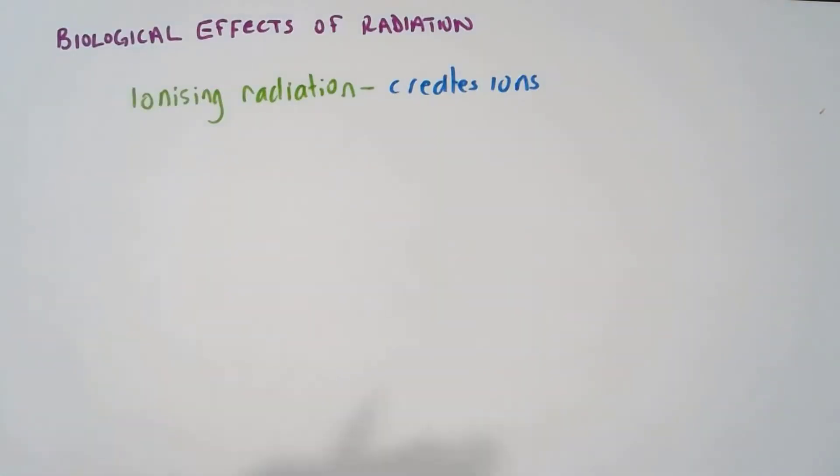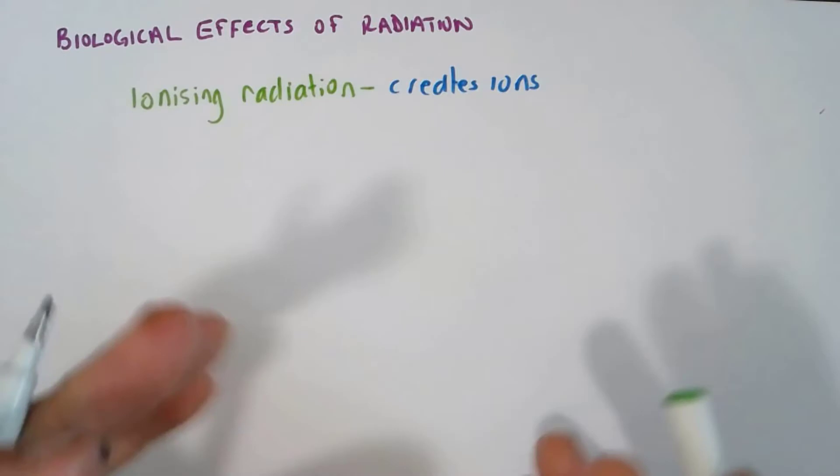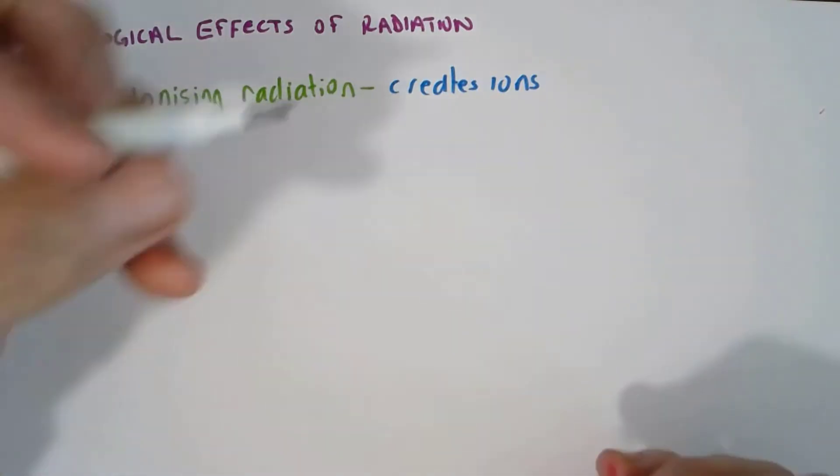Now ions are charged atoms, and you can imagine within a cell or an organism if ions are being created within cells, what it does is create unwanted chemical reactions within the cell.